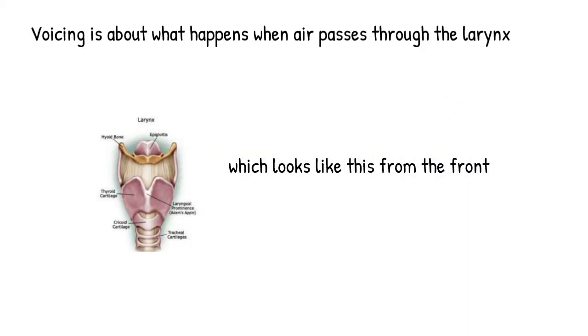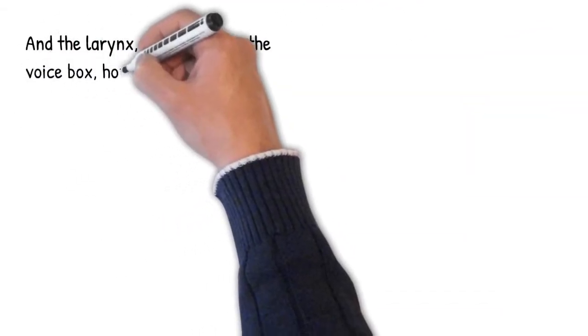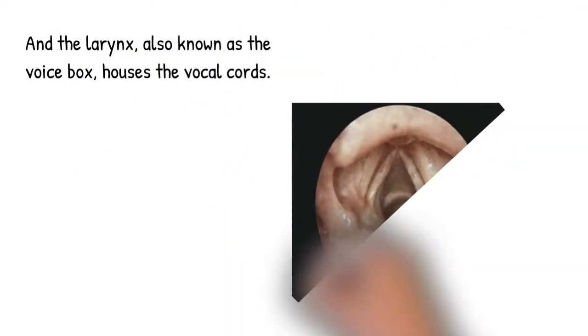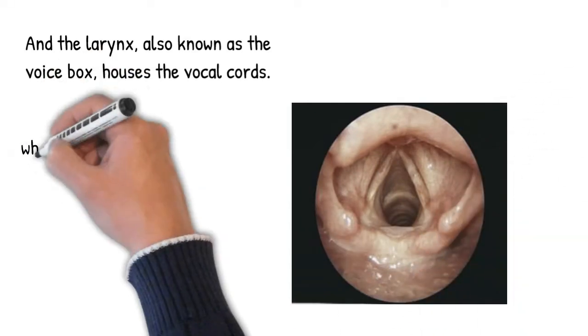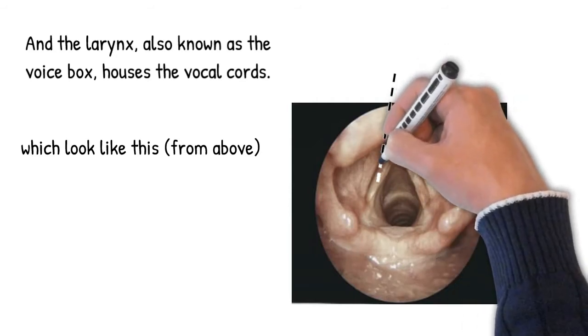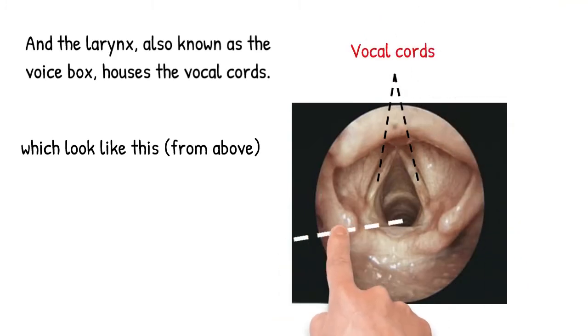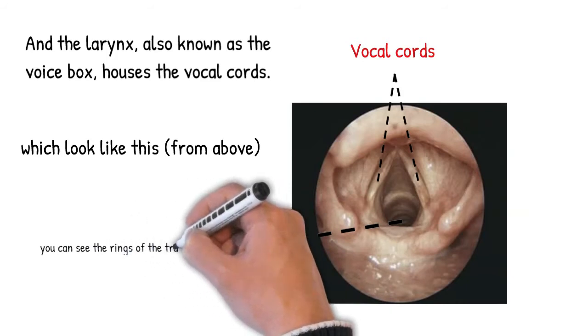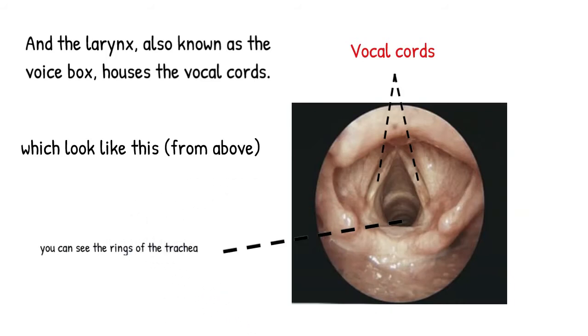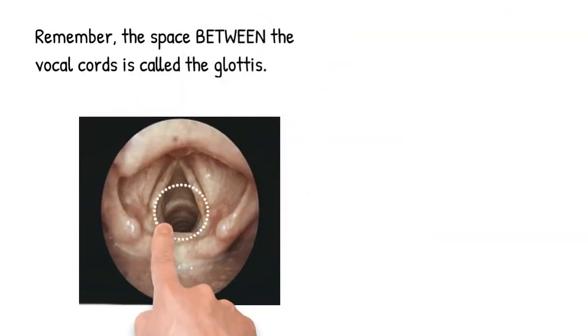Here's the view of the larynx when seen from the front. The larynx is important here because it houses the vocal cords. And here's what real-life vocal cords look like when looked at from above. Here are the vocal cords. And because we're looking from above, you can actually look down and see the rings of the trachea.